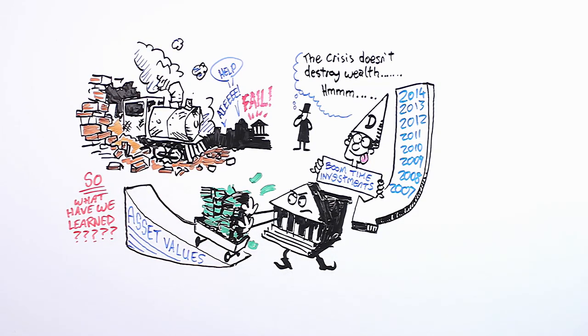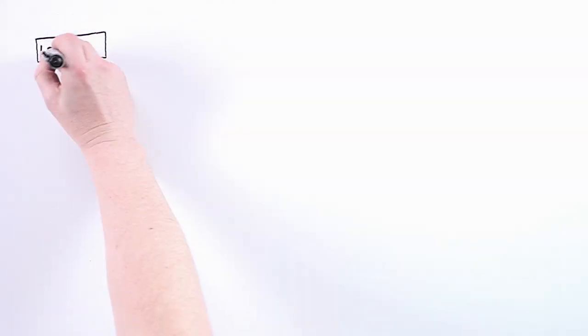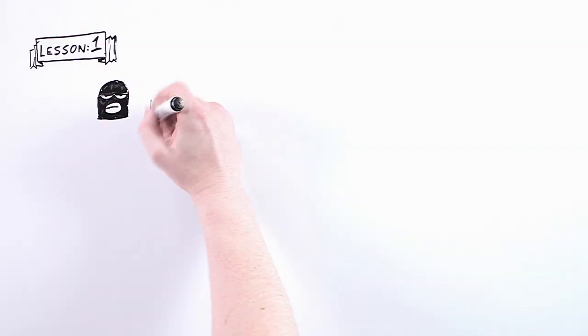So what have we learned from the 2008 banking crisis? Lesson one. The easiest way to rob a bank is to run it.